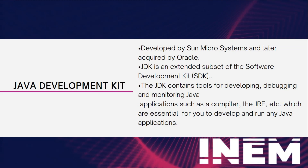The compiler translates your human-readable Java code into a format that the computer can understand and execute. Without this, your code would remain inaccessible to machines. Another vital component is the Java Runtime Environment, or JRE. This environment is essential for running Java applications, ensuring that your Java programs can execute seamlessly on any system equipped with the JRE.